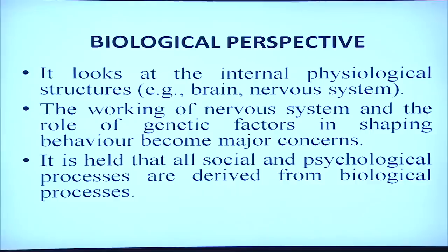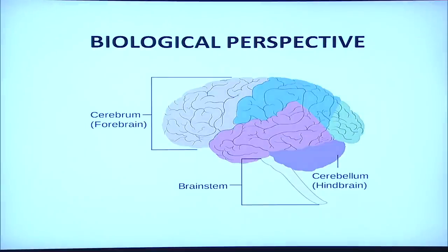Let us discuss about the first perspective of psychology. It is called the biological perspective, which means that by knowing the biology of an individual's mind, how do we try to understand the behavior of the individual? It looks at the internal physiological structures, for example the brain and the nervous system. The working of the nervous system and the role of genetic factors in shaping behavior become major concerns. It is held that all social and psychological processes are derived from biological processes. While studying human behavior from the biological point of view, one has to consider the functioning of the nervous system and how it affects the behavior of an individual.